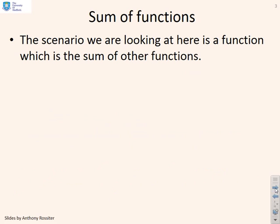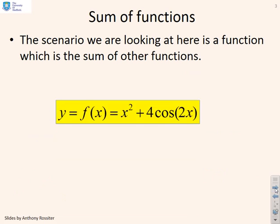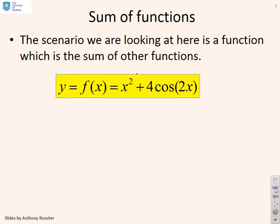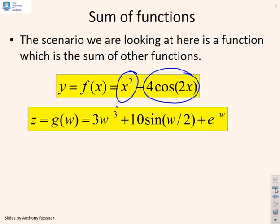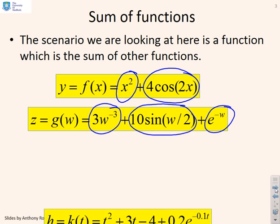Sum of functions then. The scenario we are looking at here is a function which is the sum of other functions. So here you'll see f(x) has got an x squared function and a 4cos(2x) function - two separate sub-functions contributing to f(x). Or here, with z, we've got 3w to the minus 3, 10sin(w/2), and e to the minus w. So three separate functions make up g(w).